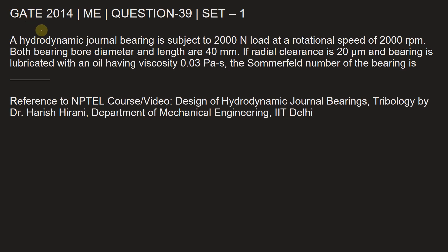This question is from GATE 2014 Mechanical Engineering Paper, Set 1, Question number 39. A hydrodynamic journal bearing is subject to 2000 Newton load at a rotational speed of 2000 rpm. Both bearing bore diameter and length are 40 millimeters. If radial clearance is 20 micrometers and bearing is lubricated with an oil having viscosity 0.03 Pascal-second, the Sommerfeld